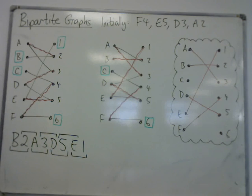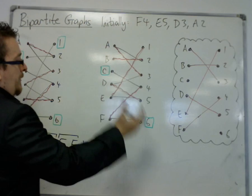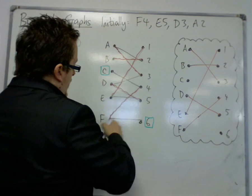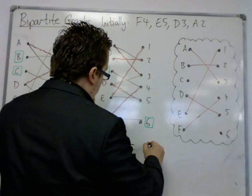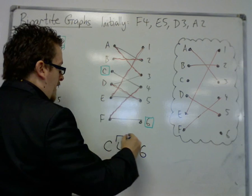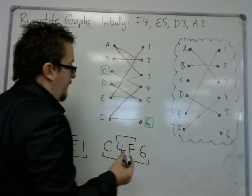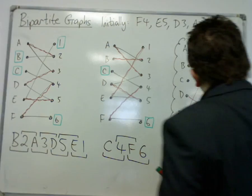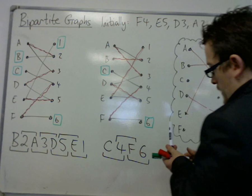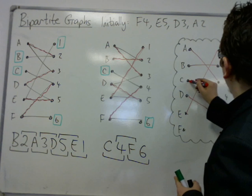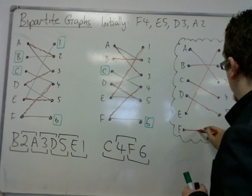I now need to find a path that gets me from c to 6. So c, 4, f, then 6. f-4 has been replaced with c-4 and f-6, so c going to 4 instead and f going to 6.